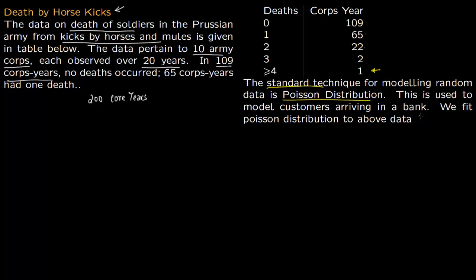A standard technique for modeling random data is Poisson distribution. This is used to model customers arriving in a bank these days, but this is an old data set and one of the first examples of applying Poisson to model random data.